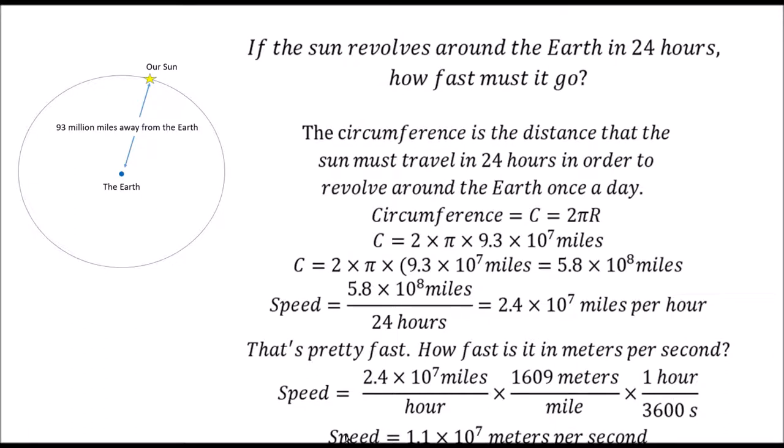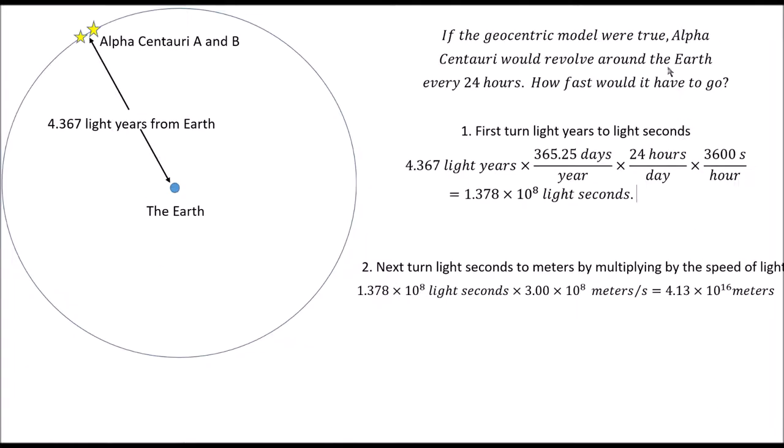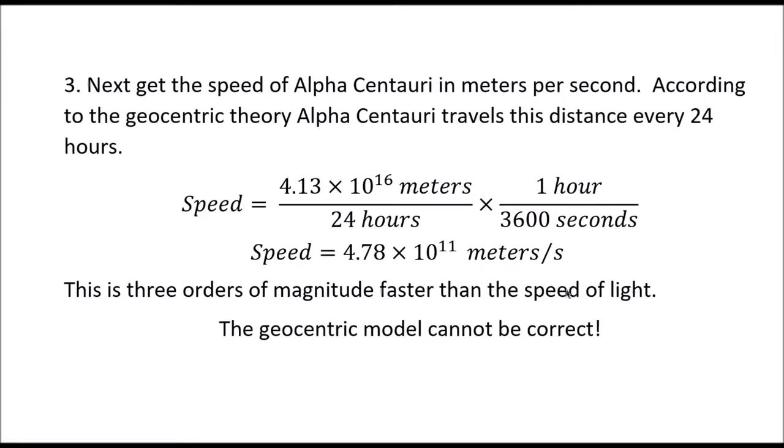If the geocentric model were true, Alpha Centauri would also have to revolve around the Earth in 24 hours. Alpha Centauri is 4.367 light years away, which is 1.378 × 10^8 light seconds. At 3 × 10^8 meters per second, that's 4.13 × 10^16 meters total distance traveled every 24 hours.